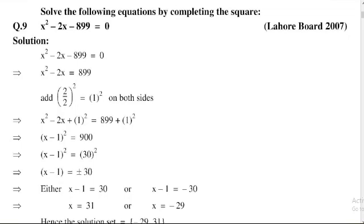The term arranged is x² - 2x. The coefficient of x is 2. Half of 2 is equal to 1. So we add (1)² on both sides.